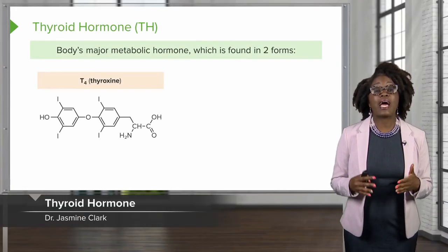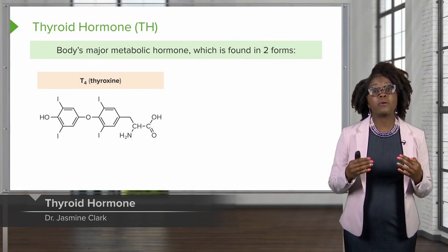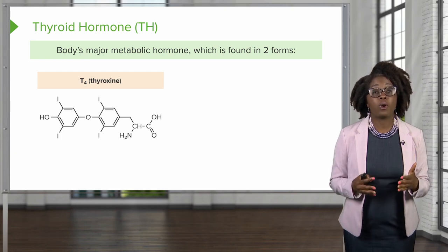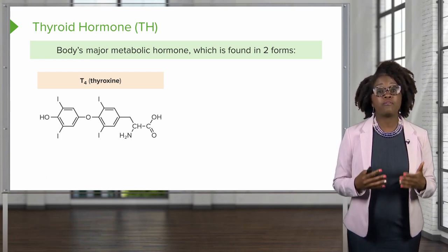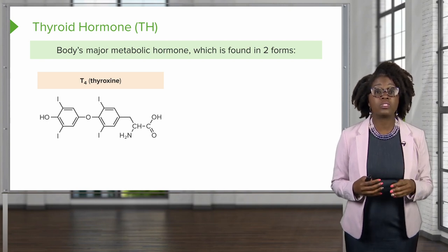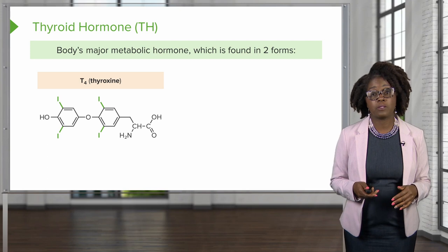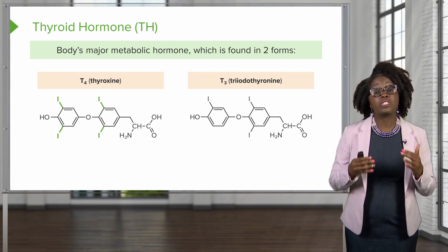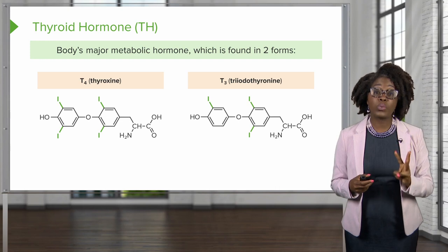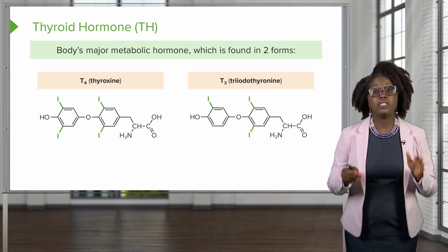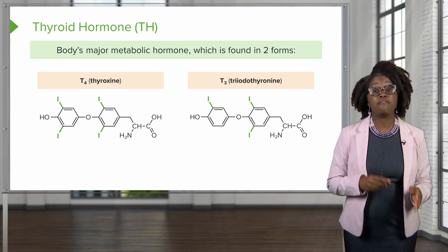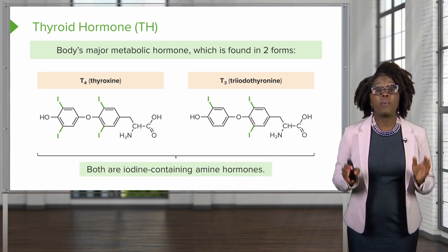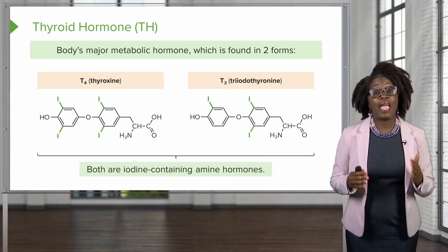The thyroid gland releases thyroid hormone, which is the body's major metabolic hormone, found in two forms. The T4 form, also known as thyroxine, is the major form consisting of two tyrosine molecules and four bound iodine atoms. The T3 form, or triiodothyronine, has two tyrosines and only three bound iodine atoms, and can be created from T4 by enzymes found at the tissue level. Both are iodine-containing amine hormones.